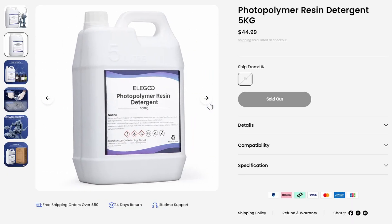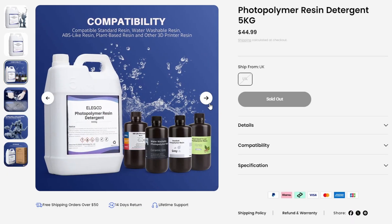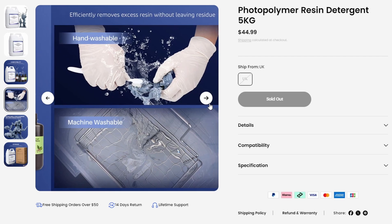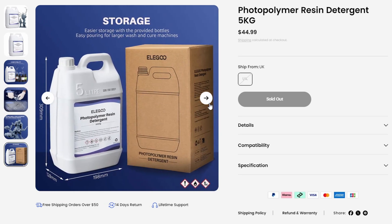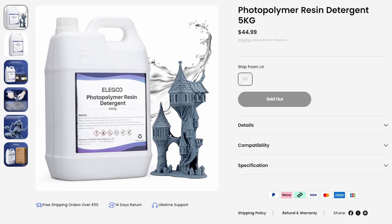The third product Elegoo wanted me to try out and showcase in this video was the Elegoo resin detergent. This detergent is a replacement or an alternate for IPA. On any normal occasion, I would use 100% IPA for my cleanups, but I have had the resin detergent for a couple months now.